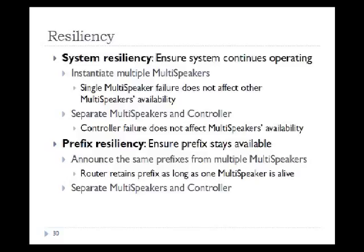The next property is resiliency. BGP-Sharp achieves two types: system resiliency and prefix resiliency. System resiliency ensures the system keeps operating even when any single component fails — achieved by instantiating multiple multi-speakers so a single failure doesn't affect others, and by separating the multi-speaker and controller so that when the controller fails, the multi-speaker is not affected. For prefix resiliency — keeping prefixes available even when components fail — the same prefix is announced from multiple multi-speakers, so when one fails the prefix remains available from the others. Separating the controller from the multi-speaker also ensures that when the controller fails, the prefix is not affected.